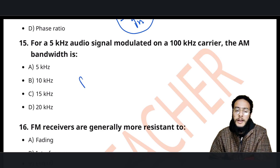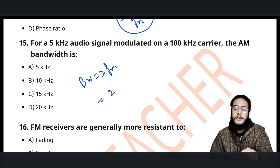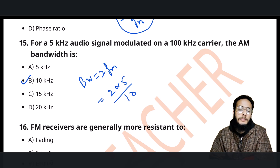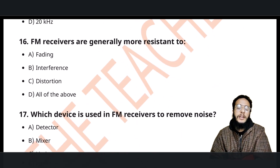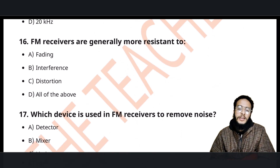When we talk specifically about AM bandwidth, for FM the bandwidth is 2 times the modulating frequency. So 2 into 5 is 10, making option B the correct answer.